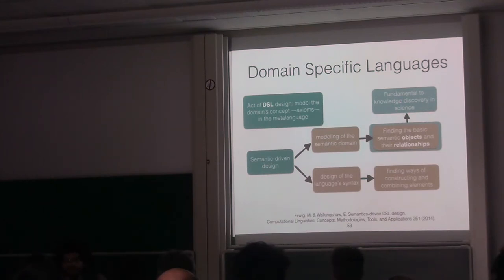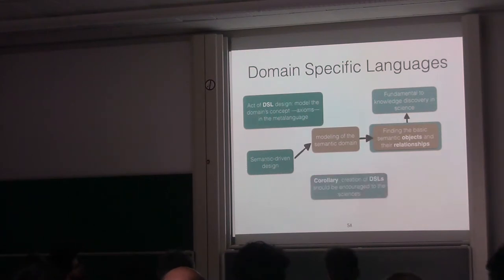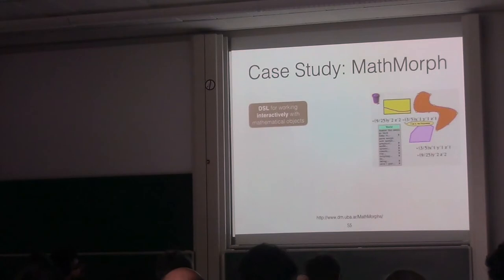I would like to highlight that finding the basic semantic objects and the relationships is super important to science, in particular to knowledge discovery. Because when you are working in your domain, you want to see what are my basic objects, how do the objects relate, and everything. So a corollary of this is that creation of domain-specific languages should be encouraged in science. And with this, I mean, should be encouraged to the domain scientist. If we are talking about biology, the biologist should try to create domain-specific languages and not to be only consumers.